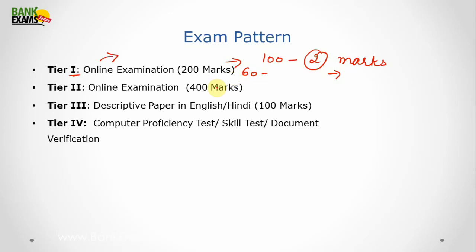In tier 2, the online examination of 400 marks will have 200 questions, each question carrying 2 marks. So you have to attempt questions to gain 400 marks as high as you can. In tier 3, descriptive paper in Hindi or English, the language is your choice, of 100 marks is introduced again.